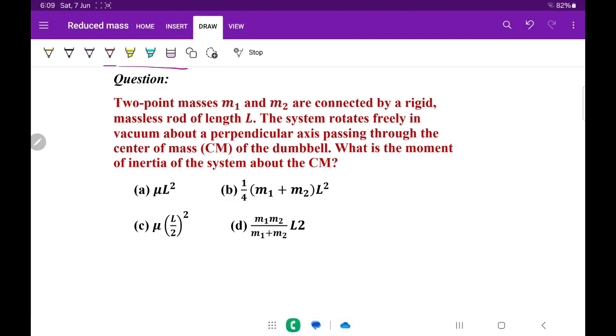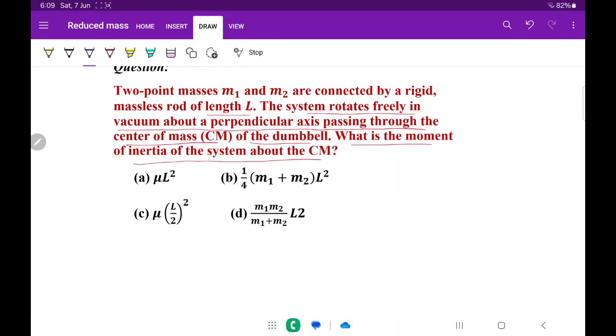Second problem: Two point masses m1, m2 are connected by a rigid massless rod of length L. The system rotates freely in vacuum about a perpendicular axis passing through the center of mass of the dumbbell. What is the moment of inertia of the system about the center of mass? Here two masses are connected by a rod, so it looks like a dumbbell. Both of them are revolving around a common axis passing through the center of mass.